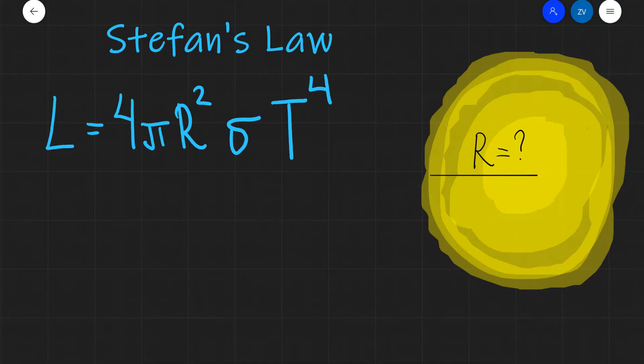Now, Stefan's Law gives us an expression for the luminosity of a star. The luminosity of a star, L, is equal to its surface area, which is 4πR², that's the formula for the surface area of a sphere, multiplied by a constant, multiplied by the temperature raised to the power of 4.